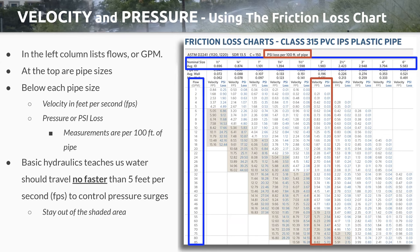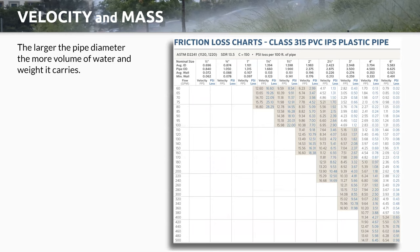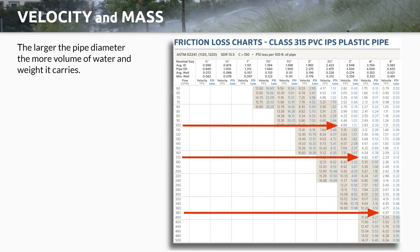Basic hydraulics: any of you that have been through IA classes or other irrigation design classes know that water needs to travel no faster than five feet per second. We'll talk about that — you want to stay out of the shaded areas. When you get into larger systems and you're using larger diameter pipe, the larger the pipe diameter, the more volume of water and the more weight it carries. So when you're getting into three-inch, four-inch, six-inch, even 12-inch sizes, you need to be aware that you have a lot of force in these pipe systems with the amount of water going through your irrigation system.